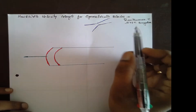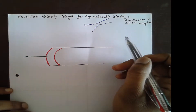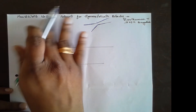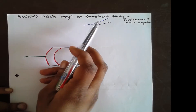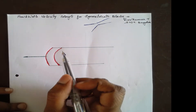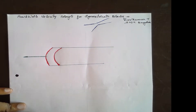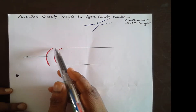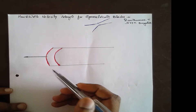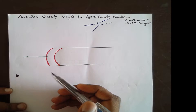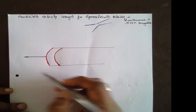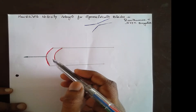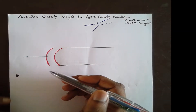My name is Ravik Kumarty. Today I am explaining how to write the velocity triangle for symmetrical blades. Symmetrical blades means the inlet and outlet diameters are the same.